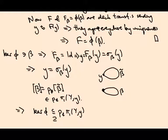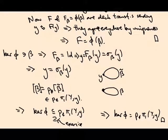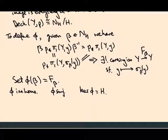The other inclusion will be a good exercise for you—it's kind of reversing this argument. So I've proved ker(φ) ⊆ p∗π₁(Y,y). You can check that ker(φ) ⊇ p∗π₁(Y,y), so ker(φ) = H, which is exactly what we needed to prove.